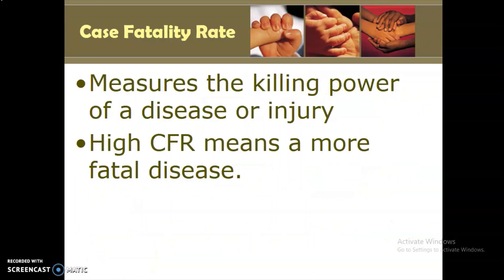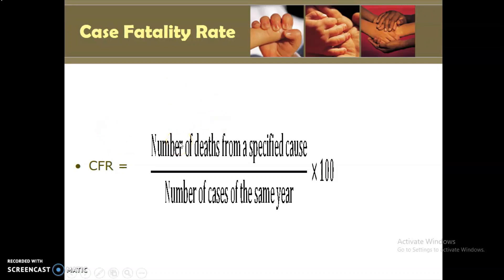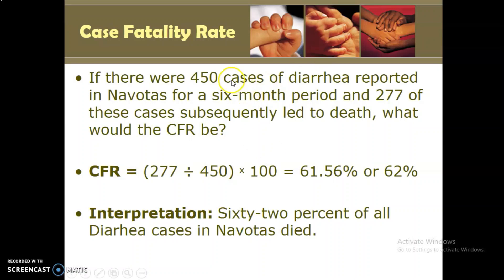The case fatality rate measures the killing power of a disease or injury — a higher CFR means a more fatal disease. The formula is: the number of deaths from a specified cause over the number of cases of that disease in the same year, times 100, as we are computing a percentage. For example, in Navotas, there were 450 diarrhea cases and 277 deaths. So 277 divided by 450 times 100 equals approximately 61 to 62 percent — meaning about 62% of all diarrhea cases resulted in death.